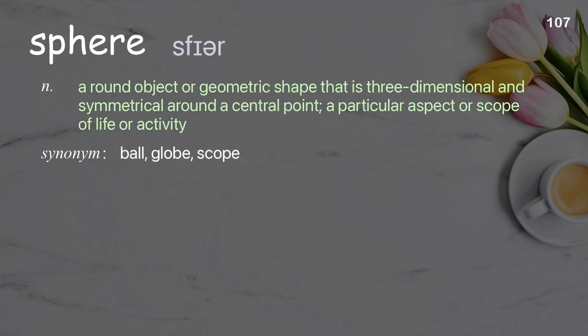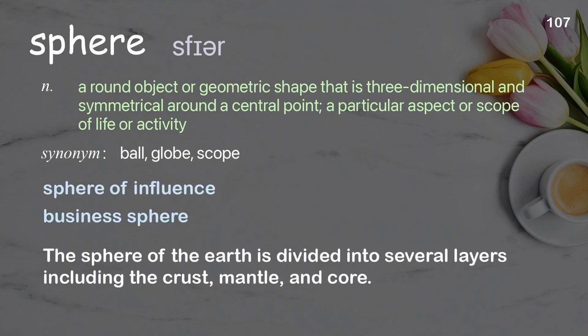Sphere: a round object or geometric shape that is three-dimensional and symmetrical around a central point; also a particular aspect or scope of life or activity. Examples: sphere of influence, business sphere. The sphere of the earth is divided into several layers, including the crust, mantle, and core.